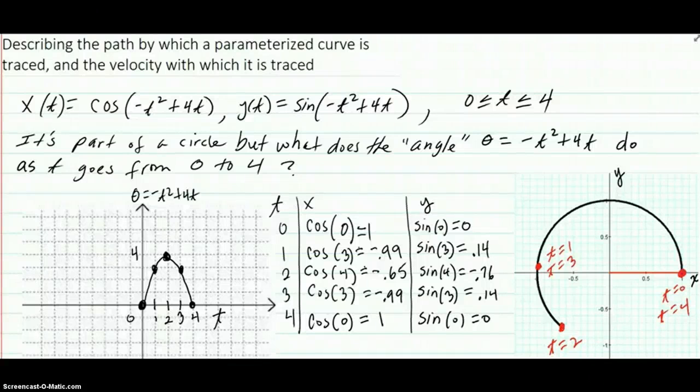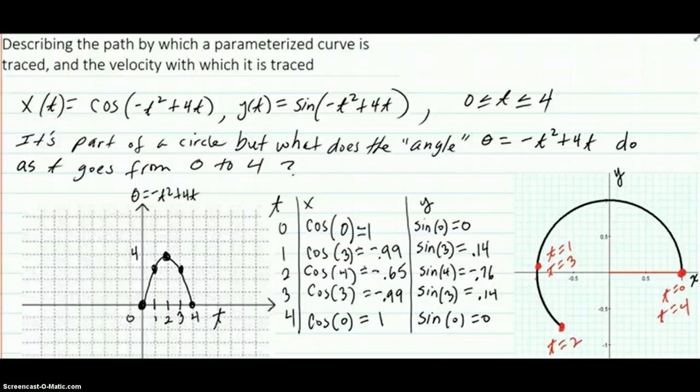The path by which a parametrized curve is traced, and the velocity with which it is traced.